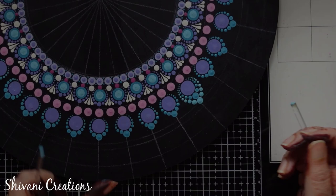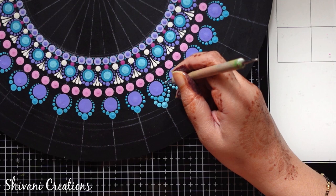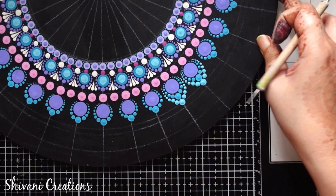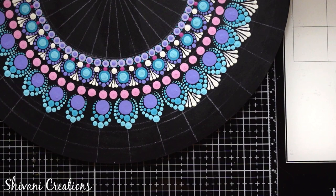Now for the next row I have just mixed little more white with previous blue color and making the same pattern. Then again I am creating the loop petals here using white chalk paint.